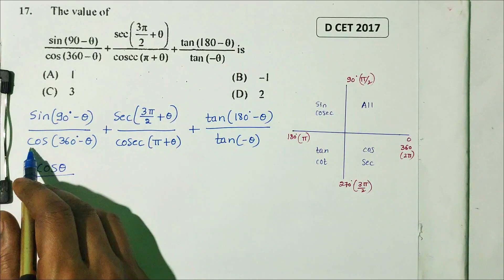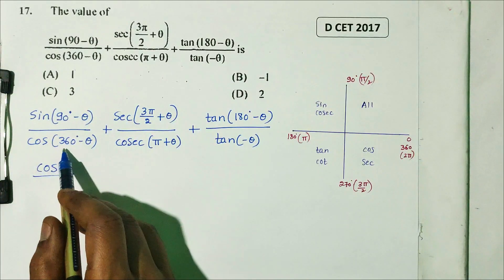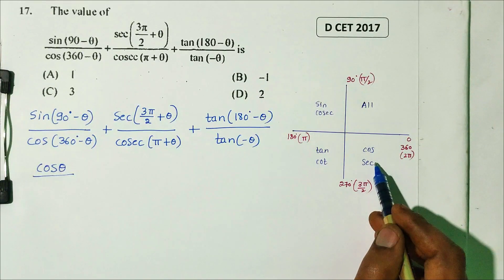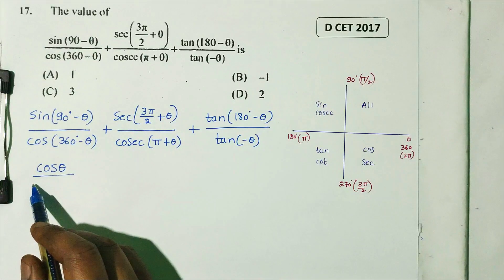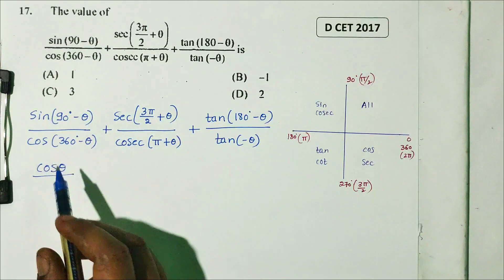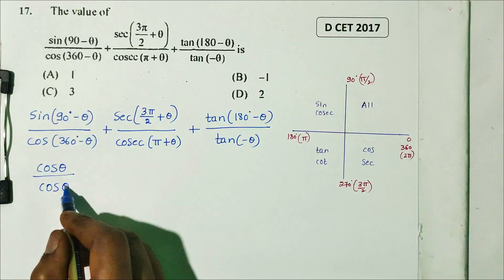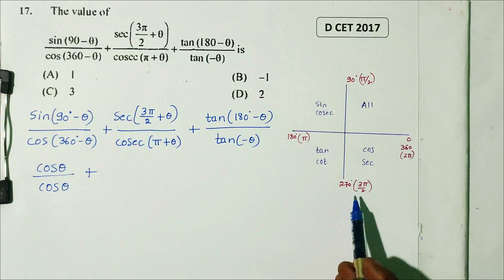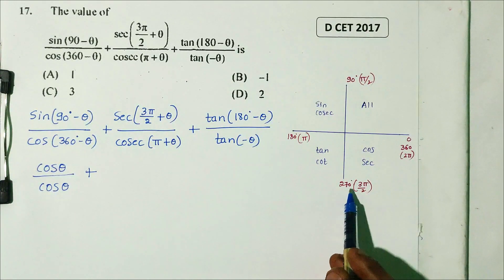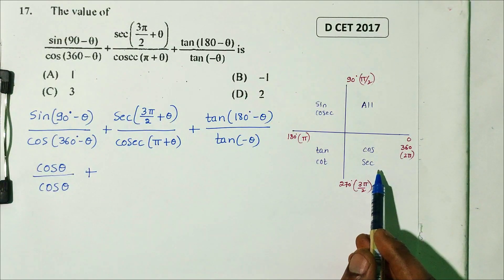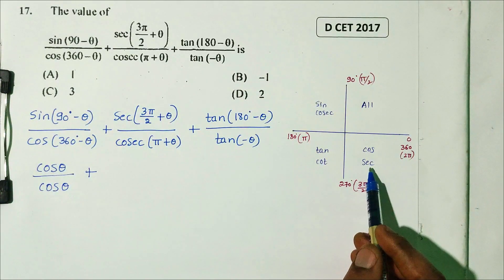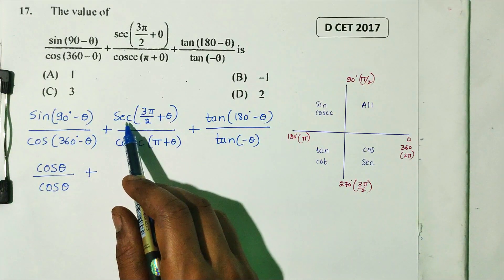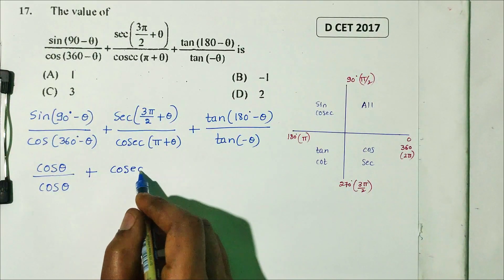Dividing by cos(360°−θ): 360° puts us in the fourth quadrant where cosine is positive, so cos(360°−θ) equals cosθ. Next, sec(3π/2+θ): 3π/2 is 270°, so 270°+θ is the fourth quadrant where cosecant is positive.